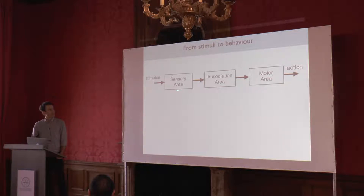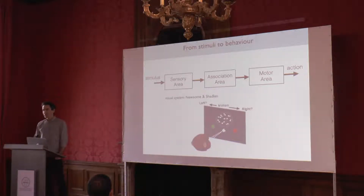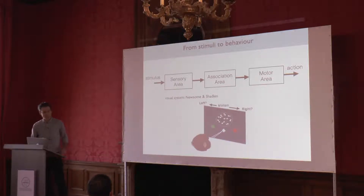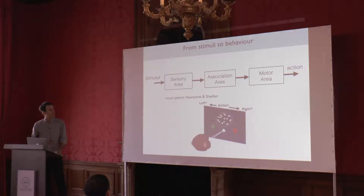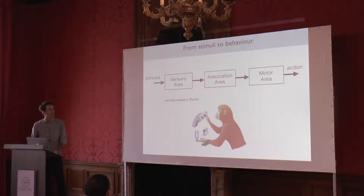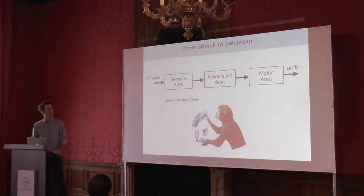This picture has basically been established through some seminal works, in particular works by Mike Shadlen and Bill Newsom on the famous random dot motion task. In this context, the sensory area is the mediotemporal cortex, area MT, the association area is LIP, and then the motor area is maybe the frontal eye field. This has also been done in other modalities — Ranulfo Romo has done some very prominent work in a tactile discrimination task, and the Romo lab has recorded in many different areas along the cortical hierarchy, basically supporting this picture.